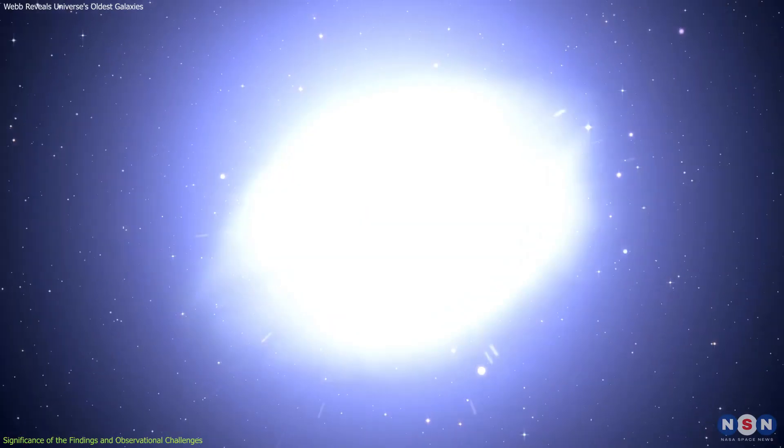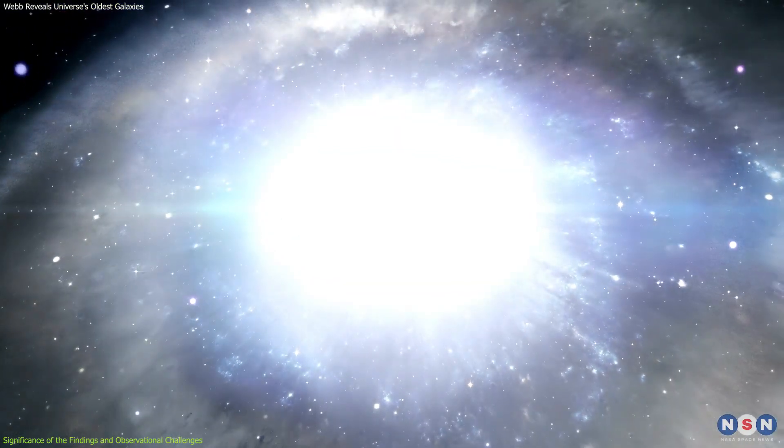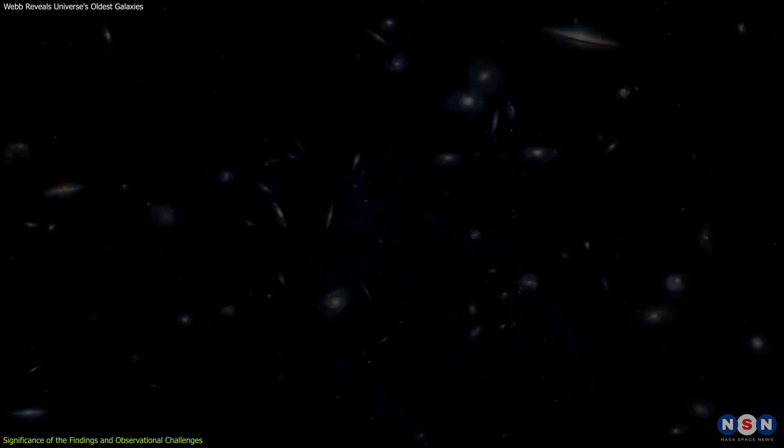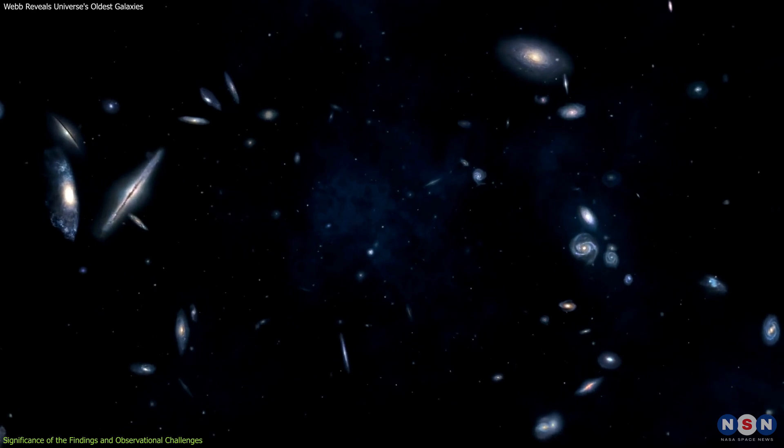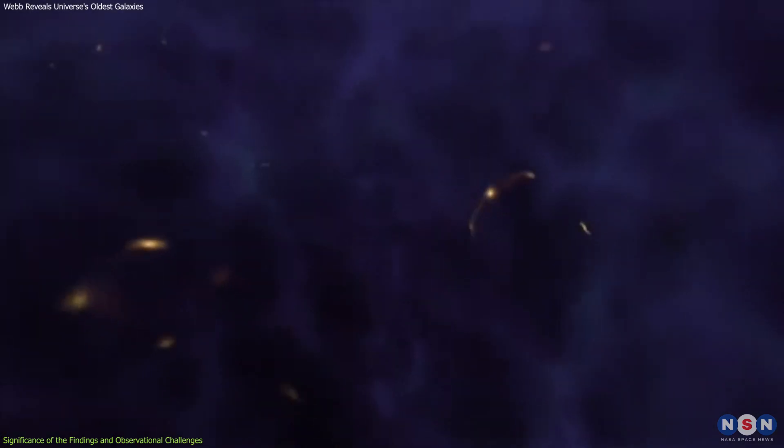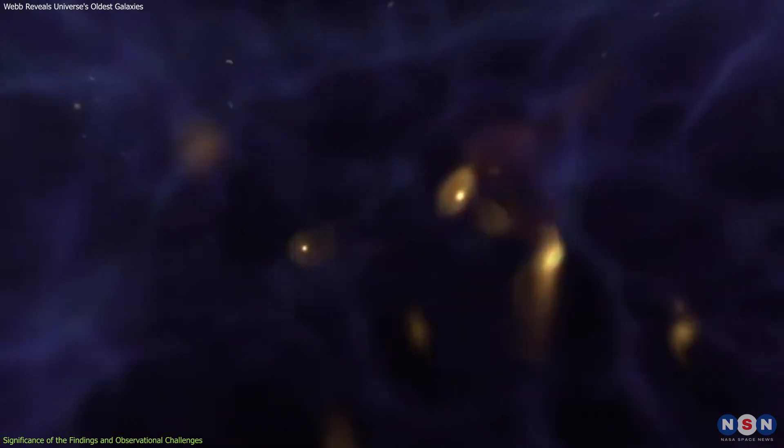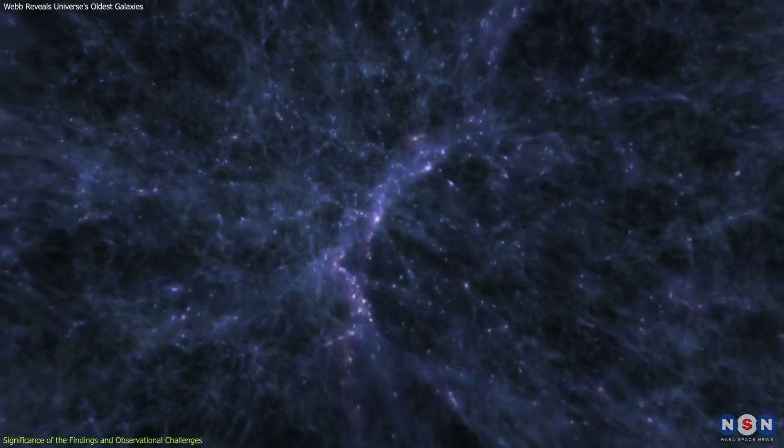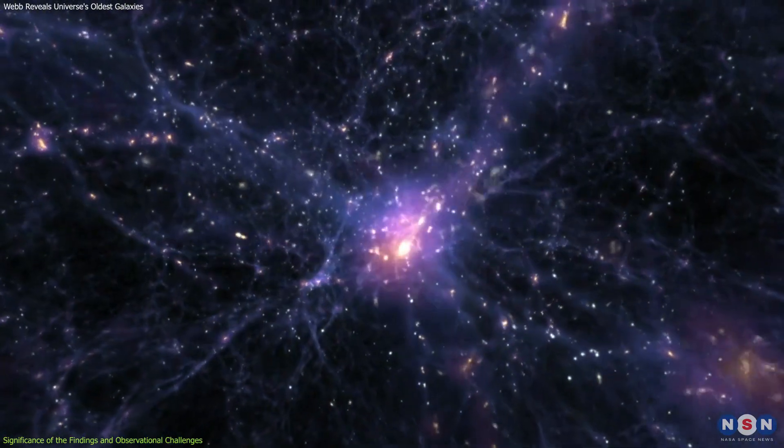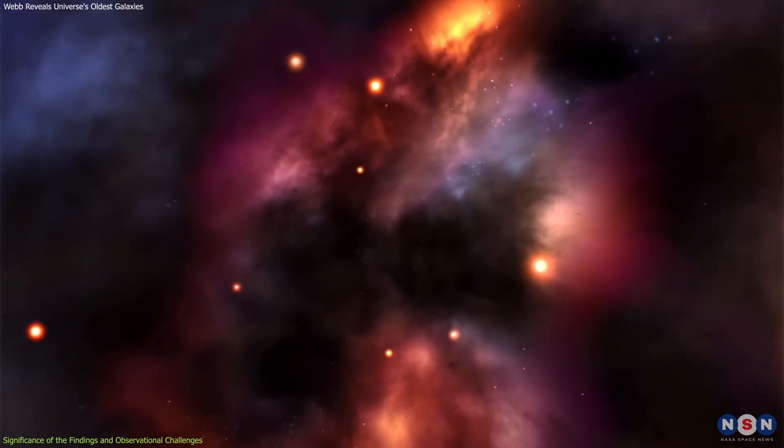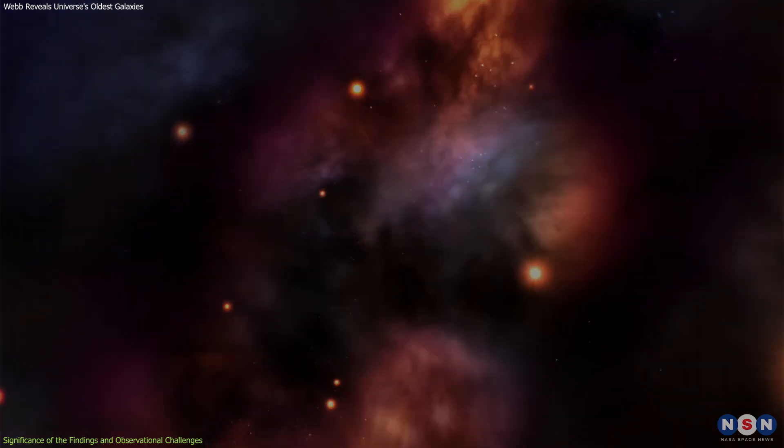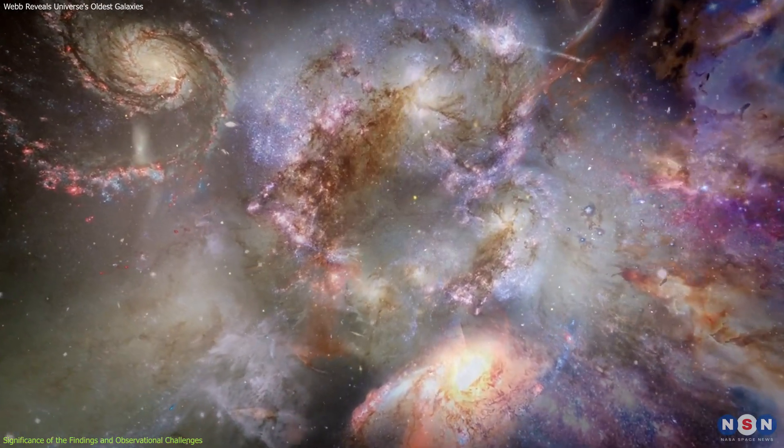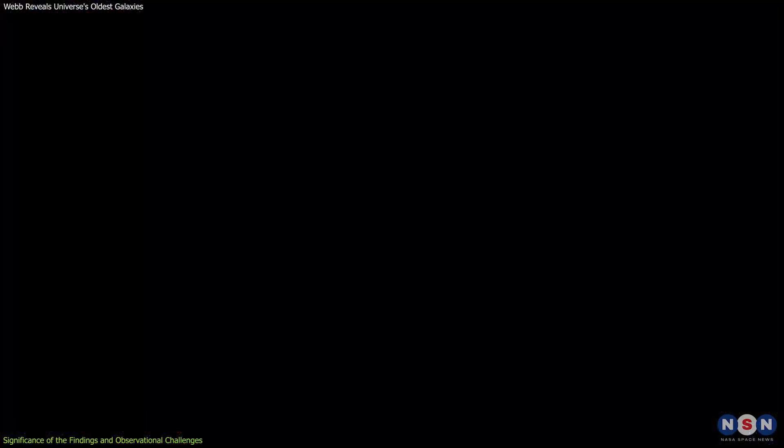These findings indicate that galaxies can form significantly faster than previously believed, suggesting that the mechanisms for galaxy creation were already in place early in the universe's history. This calls for a re-evaluation of the traditional models of galaxy formation, which assumed that massive galaxies took billions of years to develop. Scientists now must explore new theories that account for such rapid and prolific star formation, considering factors like higher matter densities, intense radiation fields, and unique chemical compositions in the early universe.